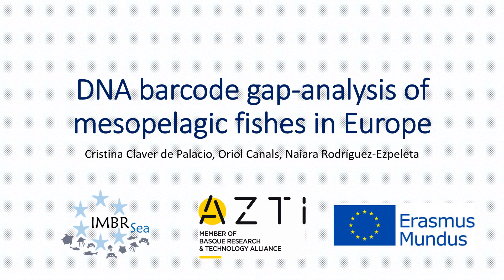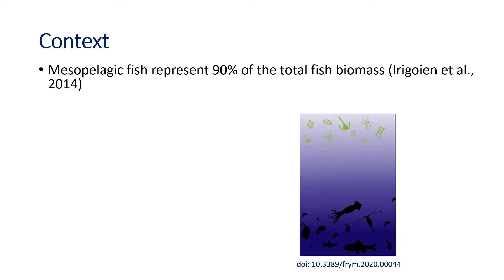Good morning. My name is Cristina and I'm going to show you our work called DNA barcode gap analysis of mesopelagic fishes in Europe. Mesopelagic fish are inhabitants of the twilight zone, which is the upper layer of the deep sea, around 200 to 1000 meters deep in the water column.